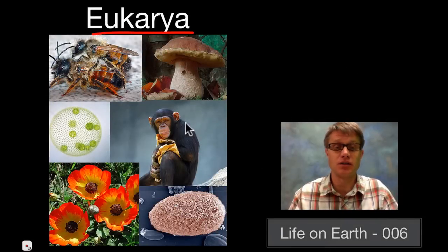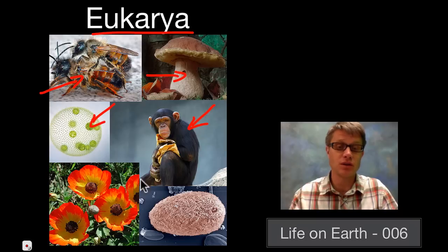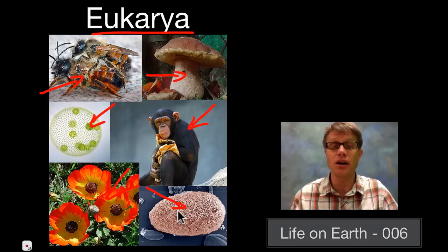That's the domain that you belong to. Because you, like a chimpanzee, have a nucleus and have organelles. But so do a bumblebee, these mushrooms, this volvox, these flowers, and this yeast. We are all eukaryotic.